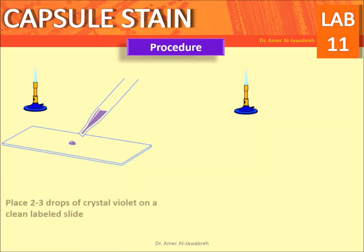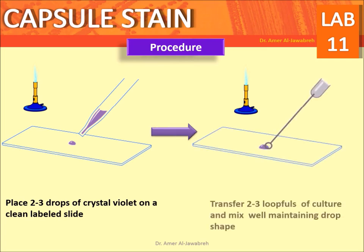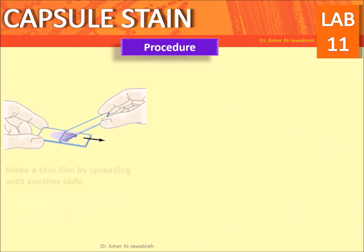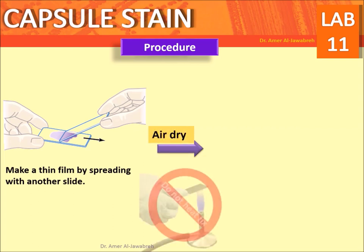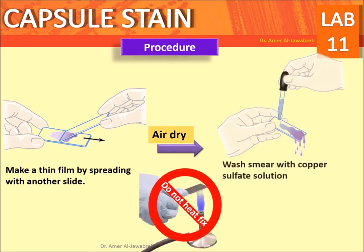Procedure: place two to three drops of crystal violet on a clean labeled slide, transfer two to three loops of culture and mix well, maintaining drop shape. Make a thin film by spreading with another slide and air dry. Do not heat fix, to avoid destruction and distortion of the capsule. Wash the smear with copper sulfate solution.